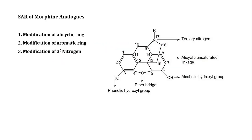This is the basic skeleton or structure of morphine. By substitution in the basic skeleton of morphine, the morphine analogs can be obtained. The major favorable substitutions are by modification in the alicyclic ring, modification in the aromatic ring, and modification in the tertiary nitrogen in the basic skeleton of morphine. Let's see what type of duration of action and biological activity is obtained when these substitutions are carried out.